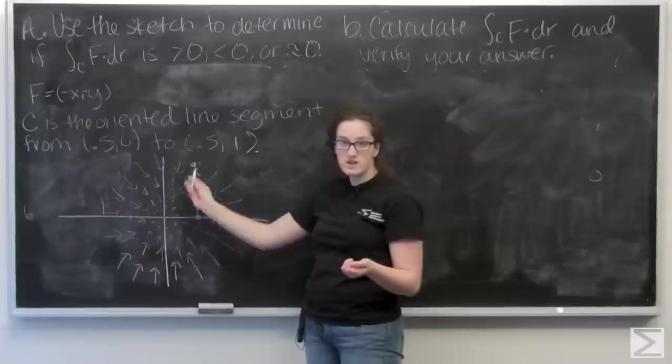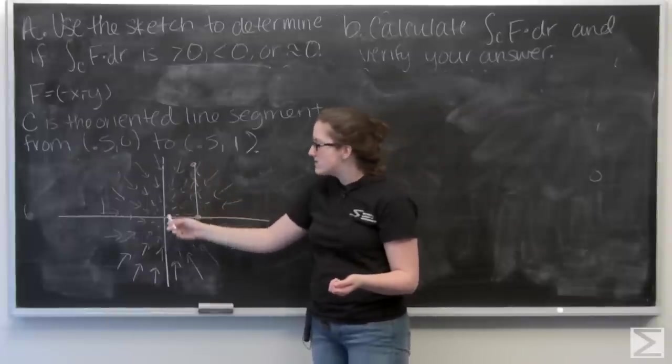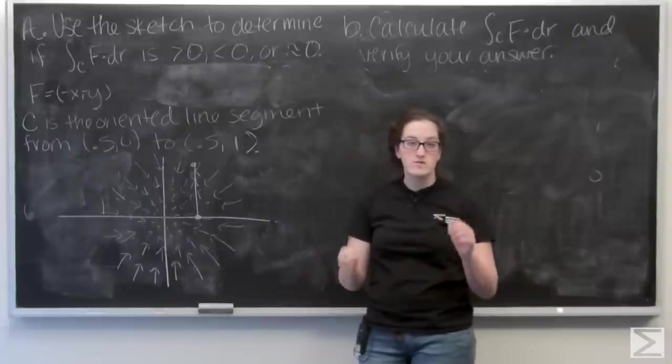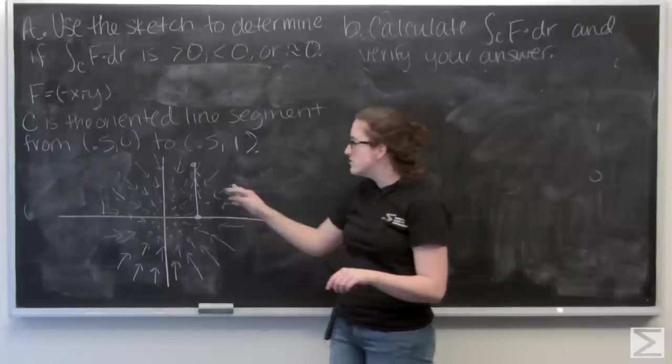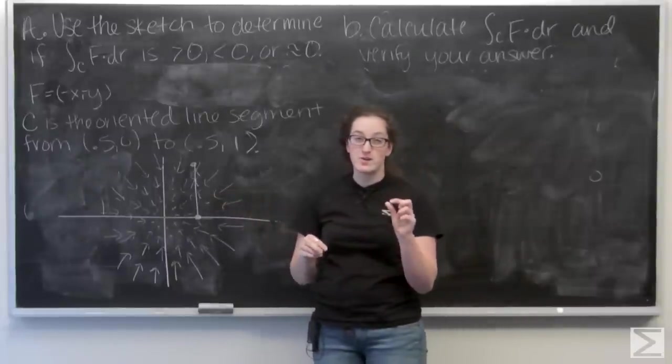So here's my curve, oriented going up, and then I have this vector field where all of the vectors point into the origin. And the closer I get to the origin, the smaller the magnitude of the vectors.